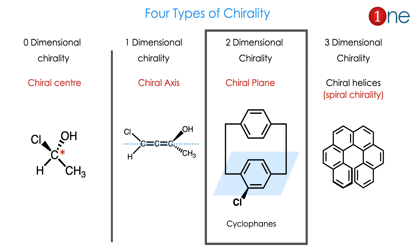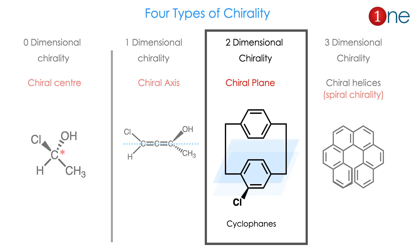Normally four types of chiralities are known: zero-dimensional, one-dimensional, two-dimensional, and three-dimensional. Zero-dimensional is a chiral center — a carbon with four different groups attached. One-dimensional chirality is called axial chirality, found in allene systems. Two-dimensional chirality, which we focus on today, is called planar chirality or plane chirality — it comes from a chiral plane created by compounds such as paracyclophanes and ansa compounds. Three-dimensional chirality is helical chirality, found in helicenes, DNA, and RNA. Today our interest is completely in two-dimensional, planar chirality.